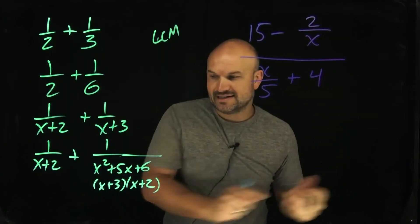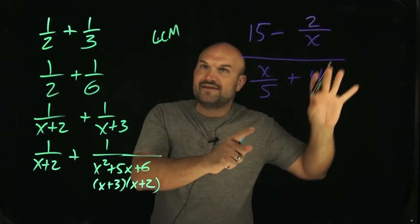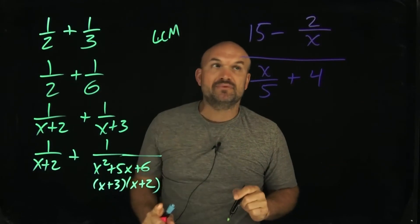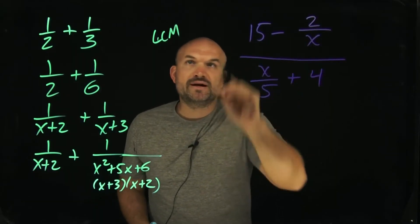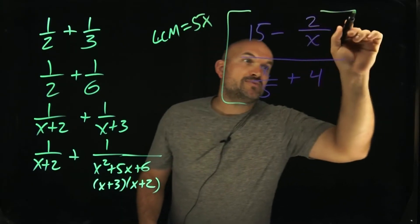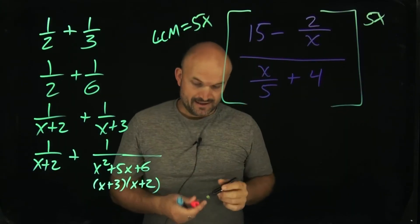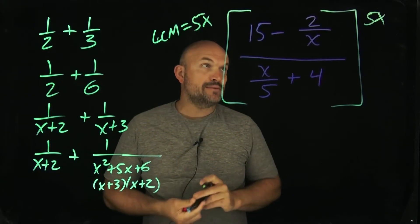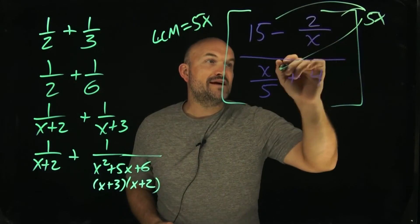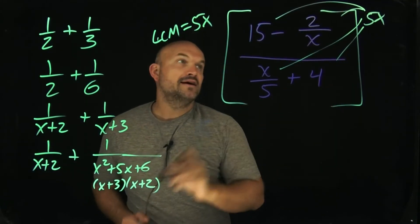What you're going to want to do in this case is identify the LCM is just going to be the product of the two factors. When we get into more complicated examples, we will work with factoring out your denominators and seeing what they have in common. But in this case, if your denominators cannot be simplified, then just multiply your two denominators. So therefore, that's going to be a 5x. What I'm going to do is multiply everything times a 5x. I know sometimes that can be confusing, so I'm going to actually rewrite everything times my 5x.